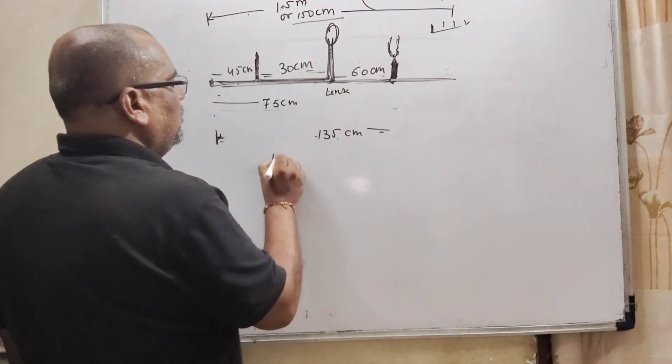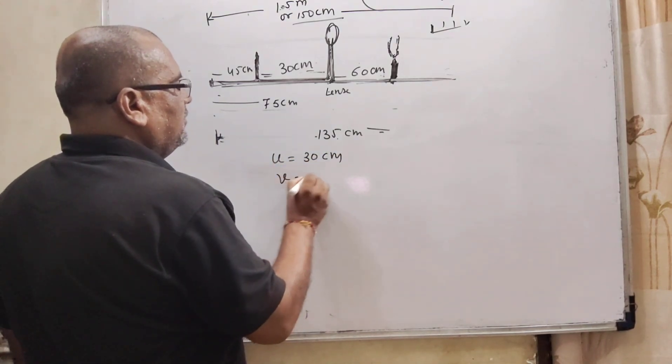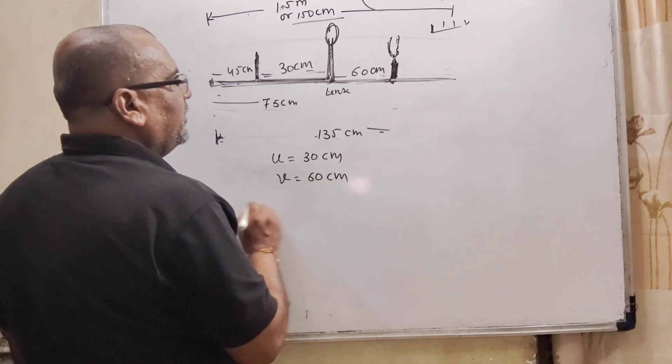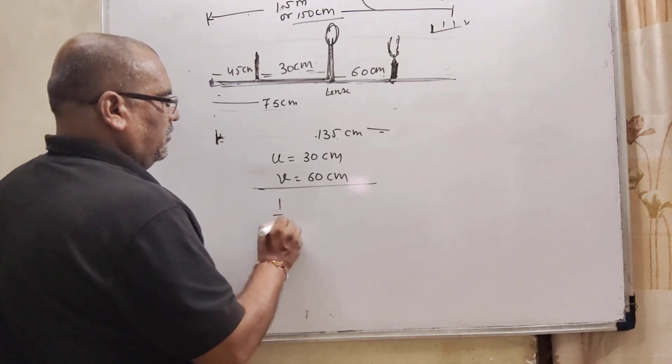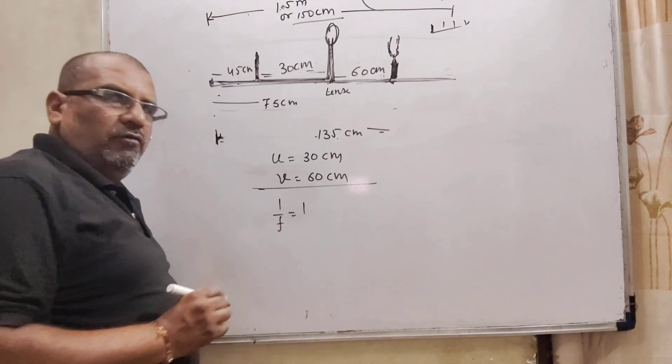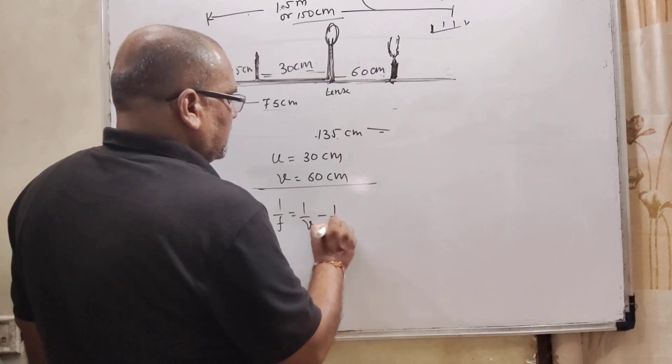So, here we get u is equal to 30 centimeter and v is equal to 60 centimeter. And we can calculate by lens formula: 1 upon f equal to 1 upon v minus 1 upon u.